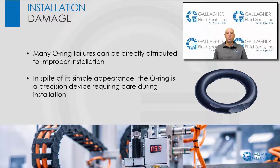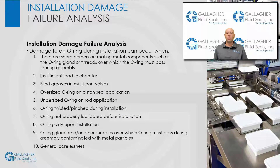Many O-ring failures can be directly attributed to improper installation. Despite its simple appearance, the O-ring is a precision device requiring care during installation. Damage can occur when there are sharp corners on mating metal components such as the O-ring gland or threads over which the O-ring must pass, insufficient lead-in chamfer, blind grooves in multiport valves, an oversized O-ring on a piston seal application, an undersized O-ring on a rod application, the O-ring being twisted or pinched during installation, the O-ring not being properly lubricated, the O-ring being dirty, the O-ring gland or other surfaces being contaminated with metal particles, or general carelessness.